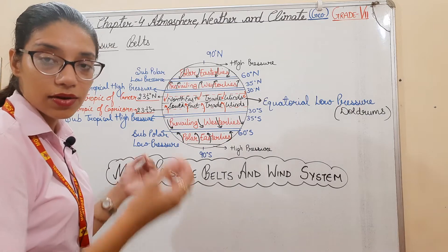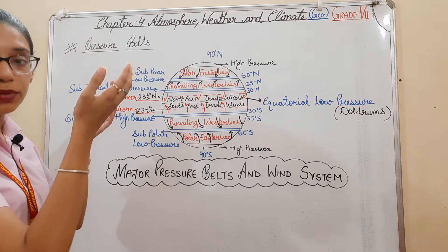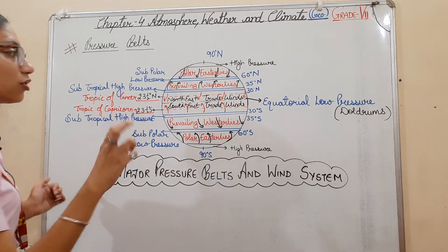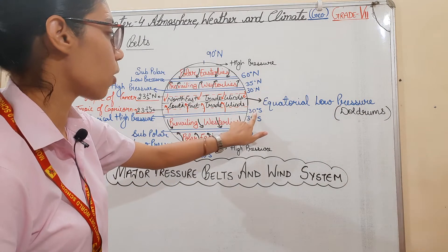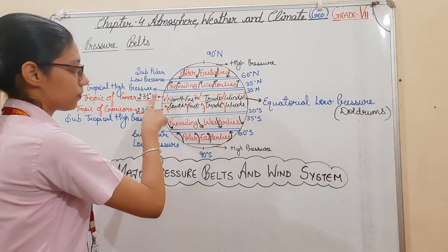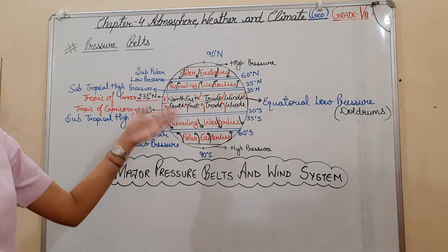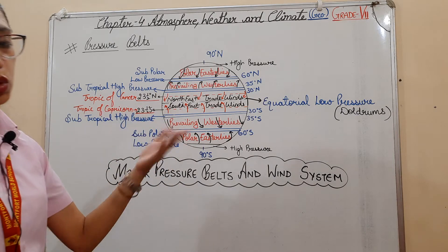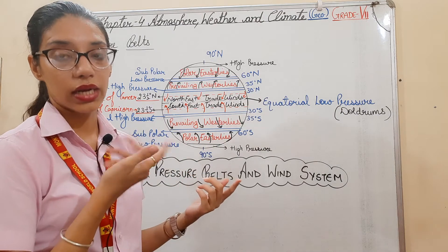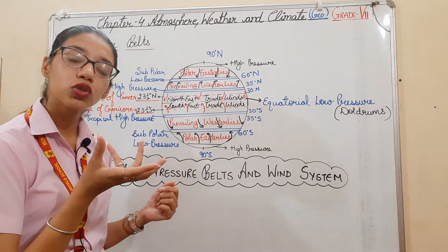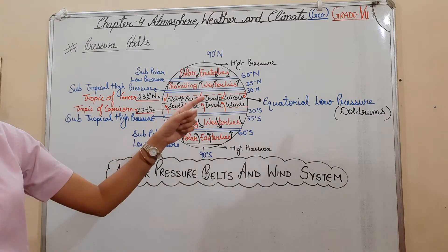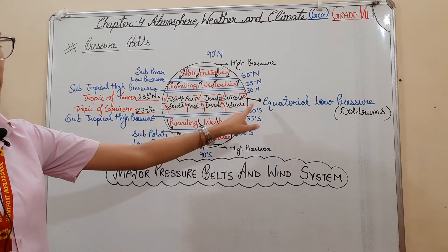The air that rises upward after being cooled moves towards the subtropical high pressure area, as you can see from the arrows. Due to Earth's rotation, the air also swings towards the equator.